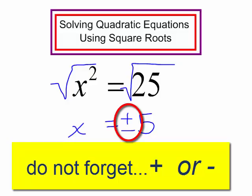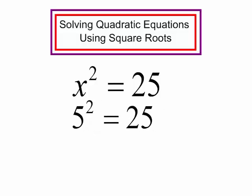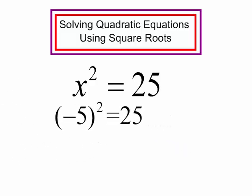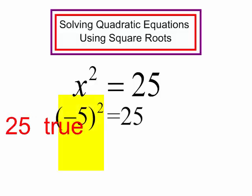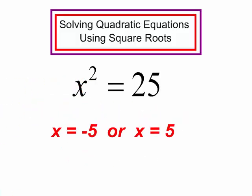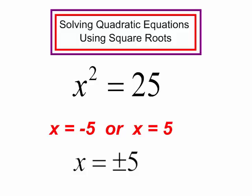Let's investigate this a little further. If I plug in 5 for my variable, I will have 5 squared equals 25 — well, 5 squared is 25, and 25 equals 25, so I get a true statement. What if I plugged in negative 5? Negative 5 squared equals 25 — that's also true. Which is why we have two answers: x equals negative 5 or x equals 5. We can also write this as x equals plus or minus 5.